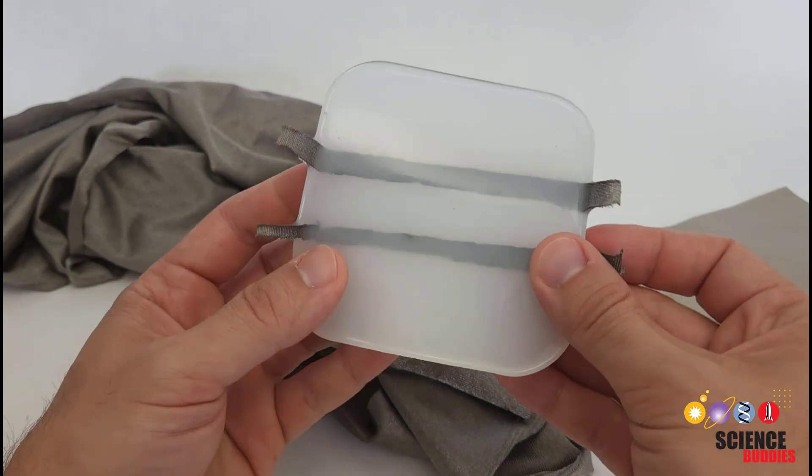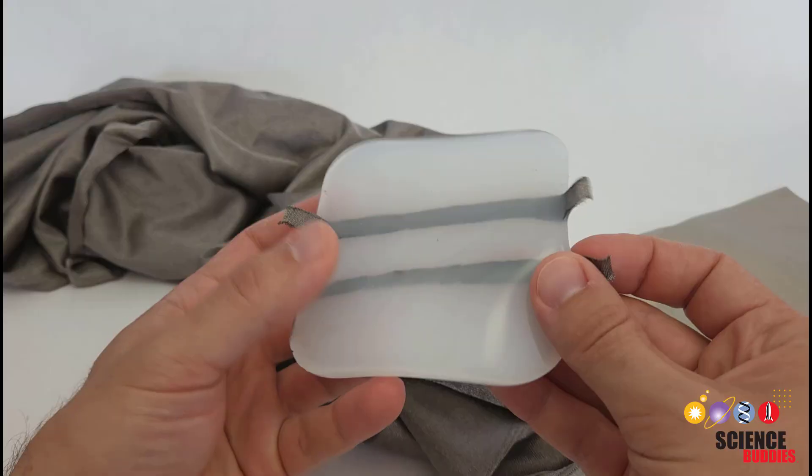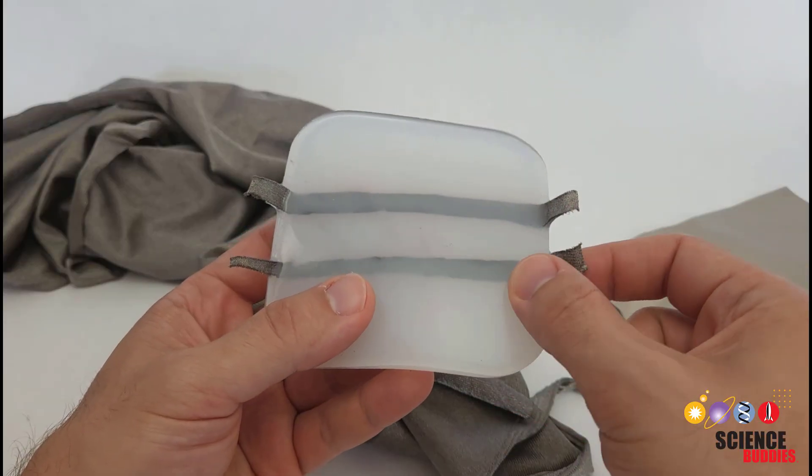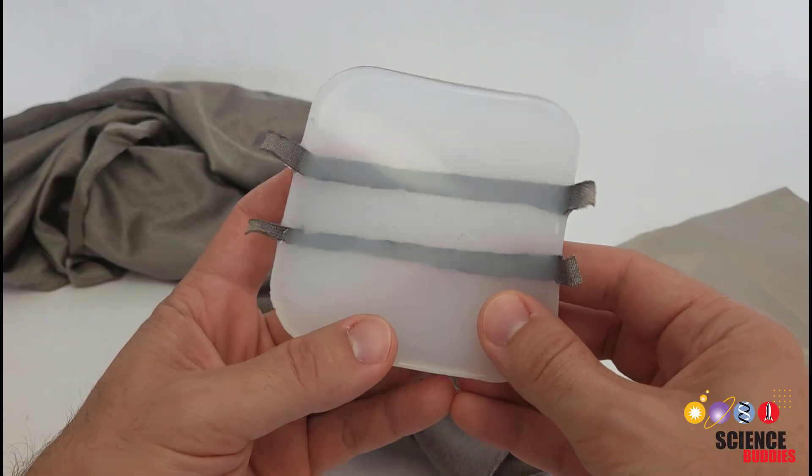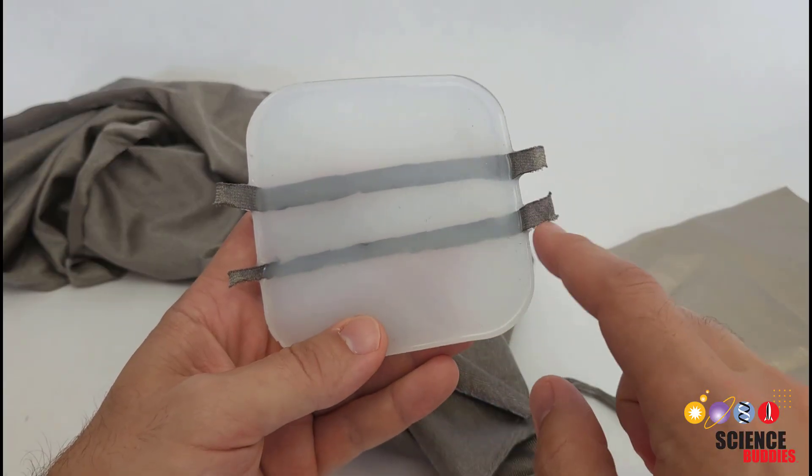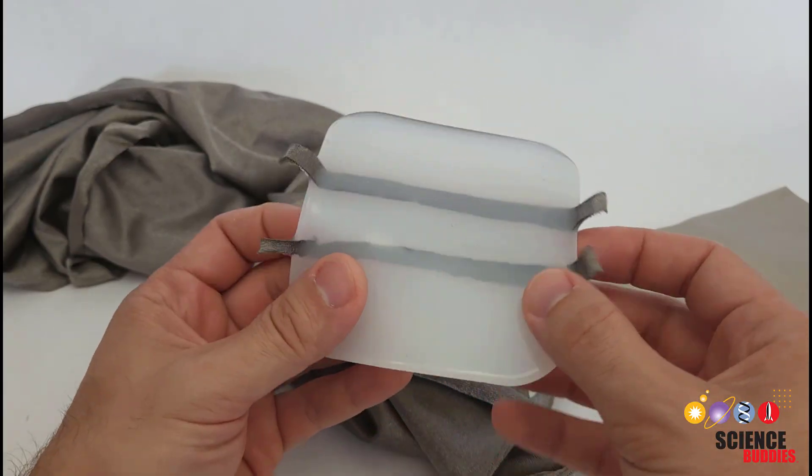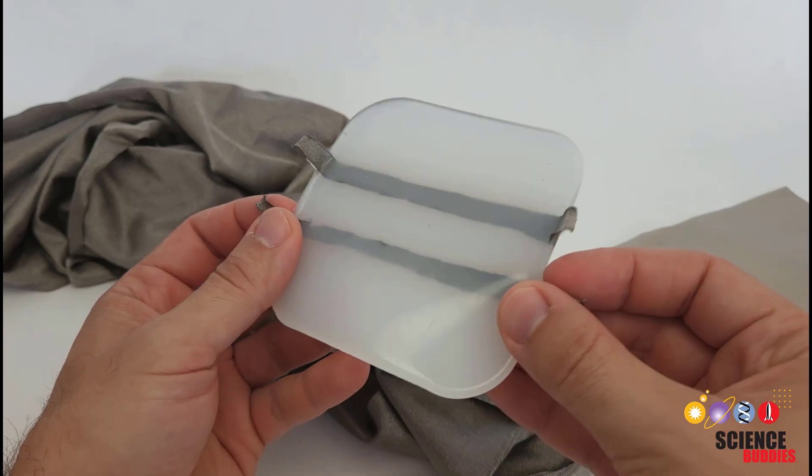So when I embed them in the silicone, I have ends of the fabric sticking out on either side that I can connect to with alligator clips when I go to measure the resistance. If the strips are too short, then they're going to be entirely embedded within the silicone and you won't have that access for your electrical measurements.